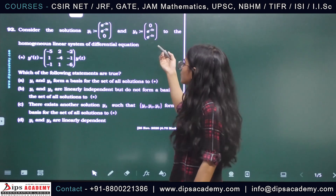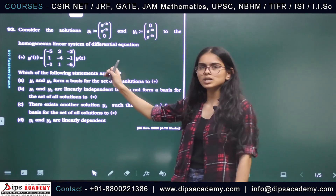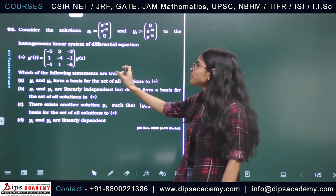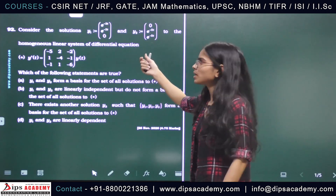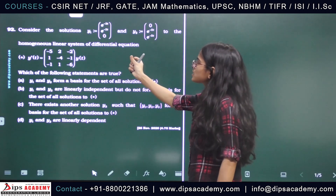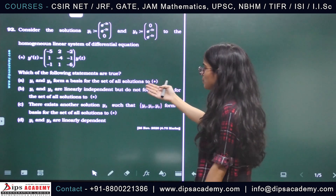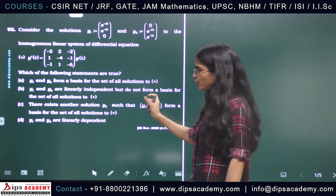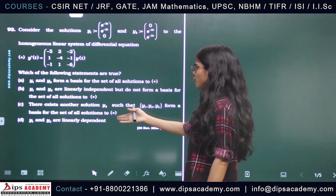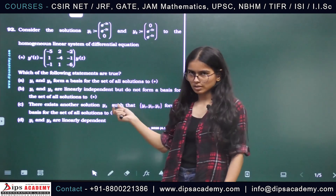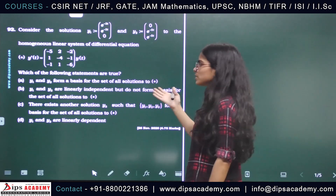In this question, we are given a system of three differential equations along with two particular solutions for that system. This is a homogeneous linear system. We need to discuss the linear independence of those solutions, whether they form a basis for the solution space, and the existence of another solution.